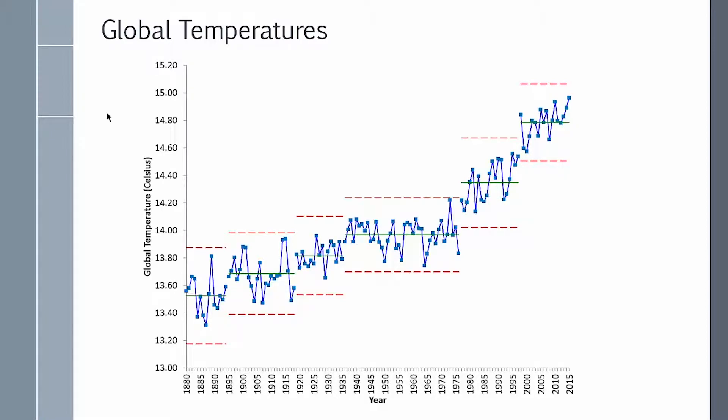You can also do global temperatures. Everybody says we're getting warmer. Here's the data from 1880 to 2015. And you can see a series of control charts in step changes, as we've had step changes in temperature over the years. But global temperature is increasing, according to the data.